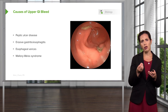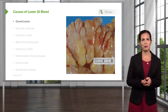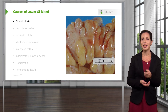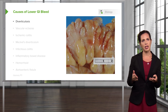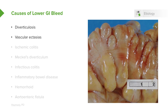Mallory-Weiss tears are generally described as patients seeing small flecks of blood in their vomit. For lower GI bleed, there are many different causes. Diverticulosis is one — it's important to note that diverticulosis is what bleeds, while diverticulitis is generally not associated with bleeding. Diverticulitis is an infection in the area of the diverticulum, which are little outpouchings of the intestinal wall. Other causes include vascular ectasias and ischemic colitis, where damage to the intestinal wall due to insufficient blood flow causes bleeding.